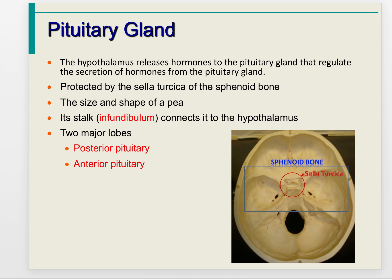The hypothalamus releases hormones into the pituitary gland that regulate the secretion of pituitary hormones. The pituitary gland is protected by the sella turcica, part of the sphenoid bone in the skull. It is about the size and shape of a pea, with a stalk called the infundibulum connecting it to the hypothalamus. The pituitary gland has two major lobes: the posterior pituitary and the anterior pituitary.